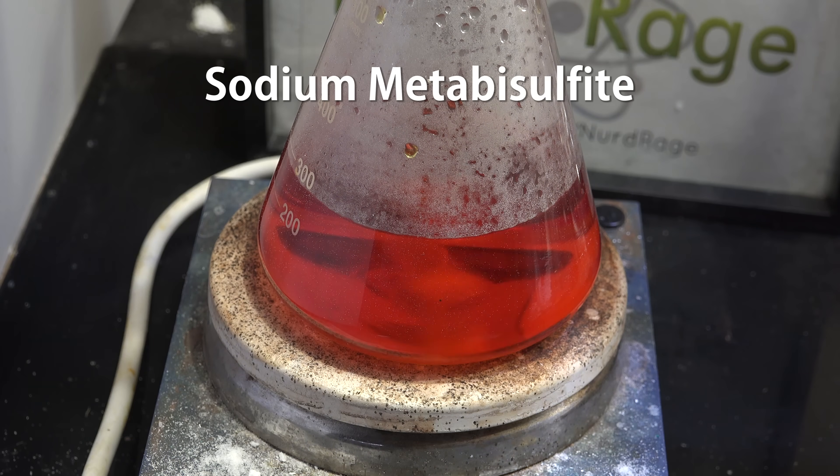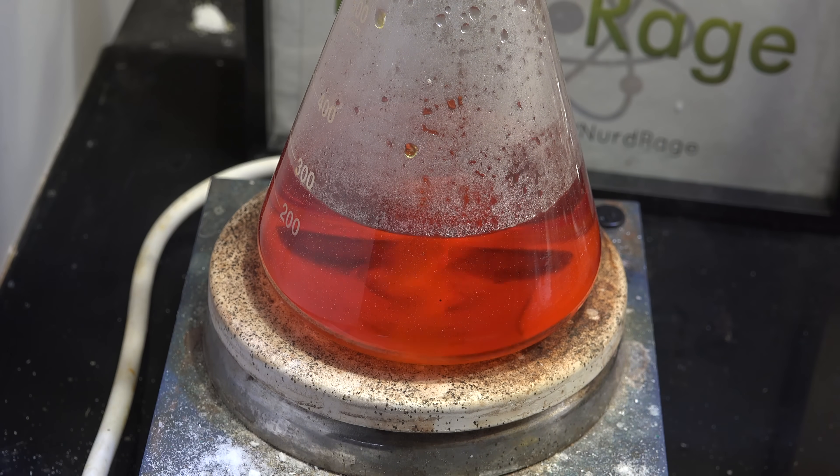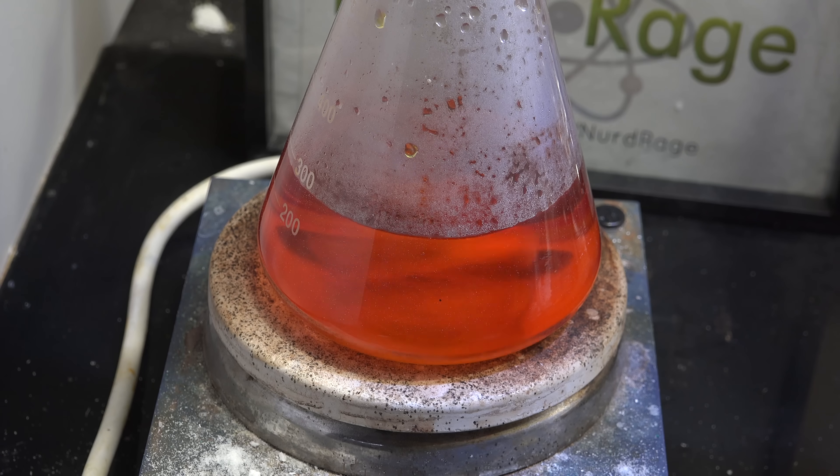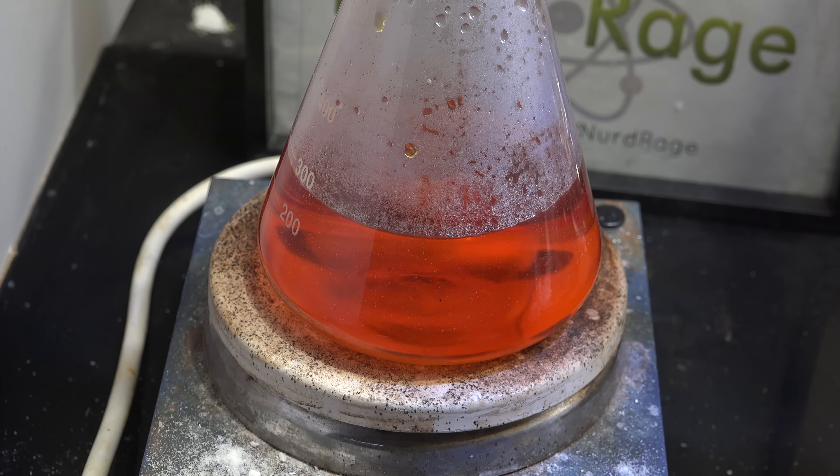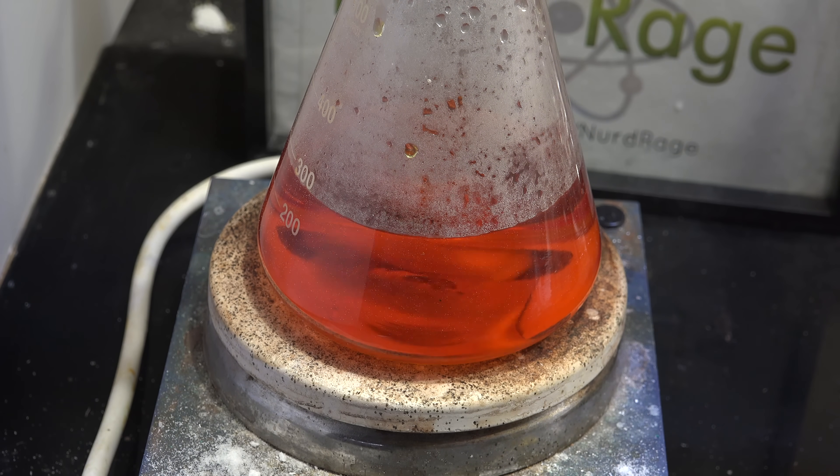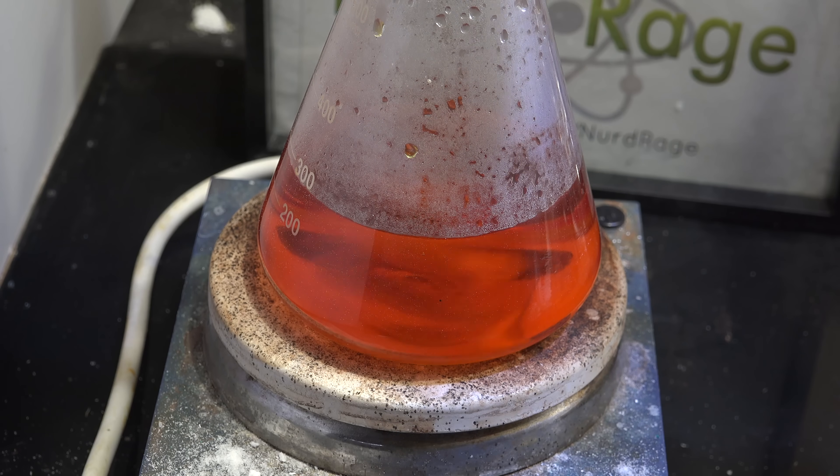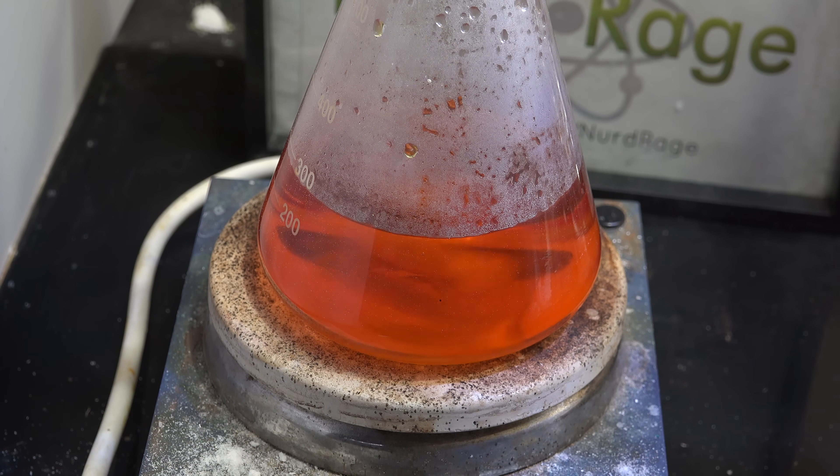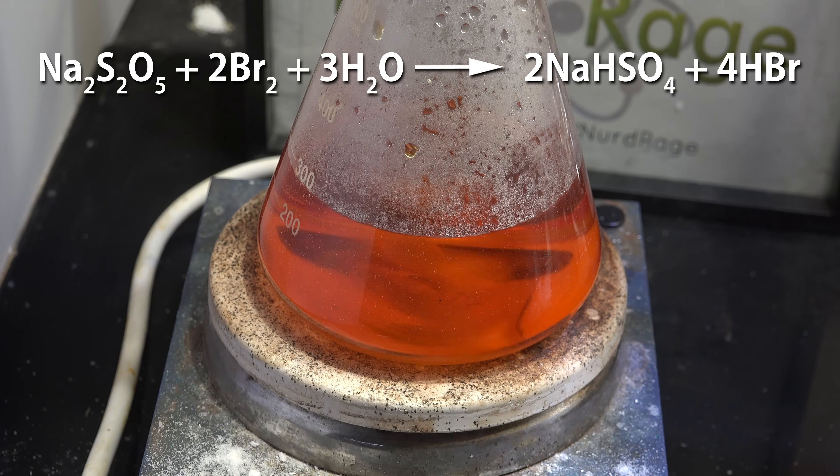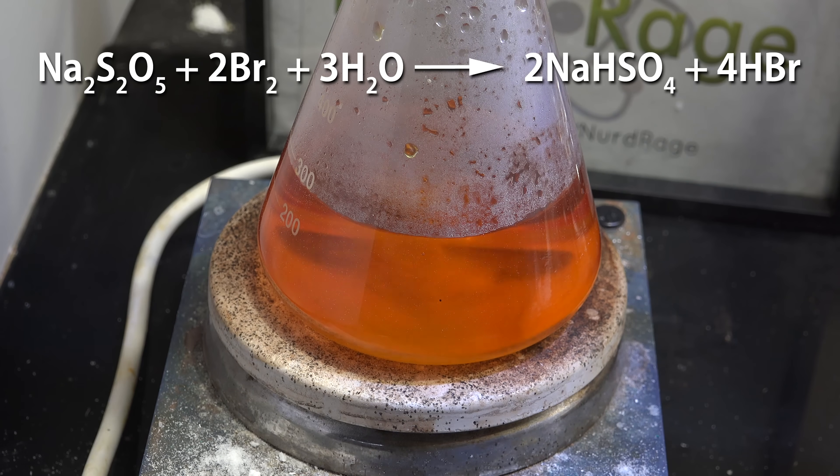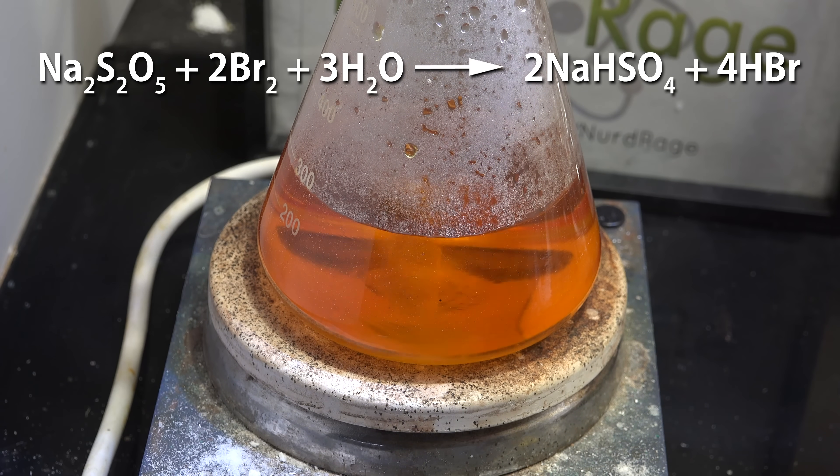An even better way is to use sodium metabisulfite as a reducing agent. It's available online for preparing dyes, gold refining and home brewing so it's easy to get. Maybe even easier than sulfur. Just add small amounts like half a gram or so to hydrobromic acid until it's clear. It reacts very quickly so you'll know when it's done. What happens is the sodium metabisulfite reacts with the bromine to produce sodium bisulfate and hydrobromic acid.